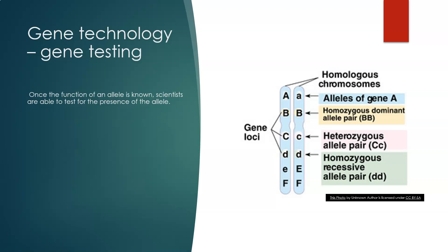Once the function of an allele is known, scientists are then able to test for the presence of that allele. Some important terms here: alleles are the types of the genes. We've got the capital A, lowercase a. If we've got a homozygous dominant pair, it's two capitals. If we've got a heterozygous allele pair, we've got the capital and the lowercase. And if we've got a homozygous recessive allele pair, we've got the lowercase.